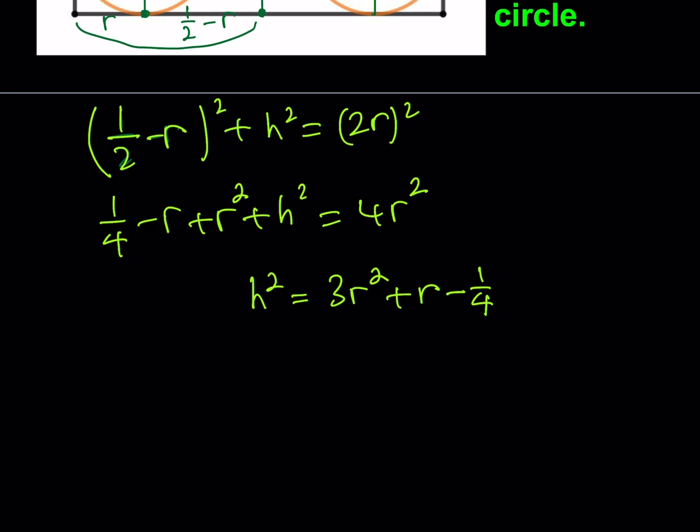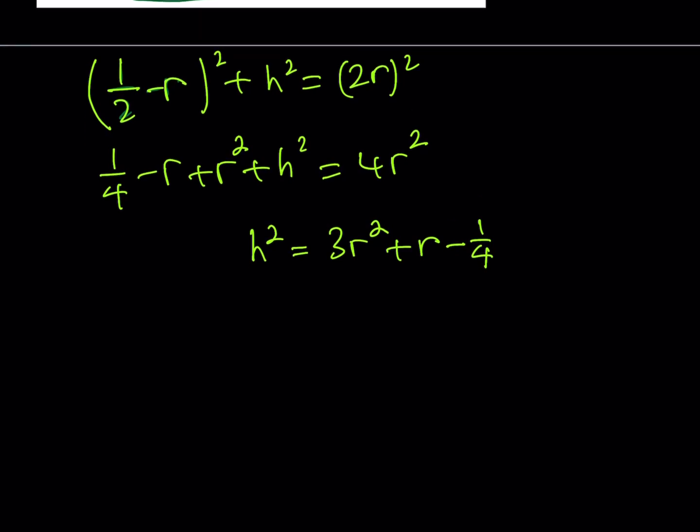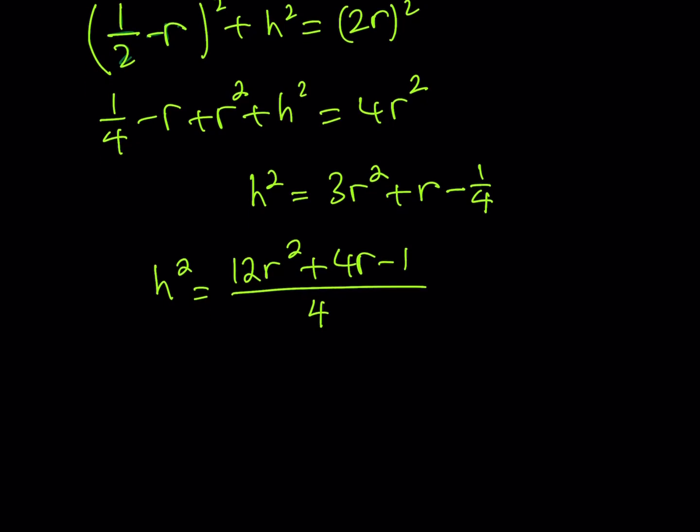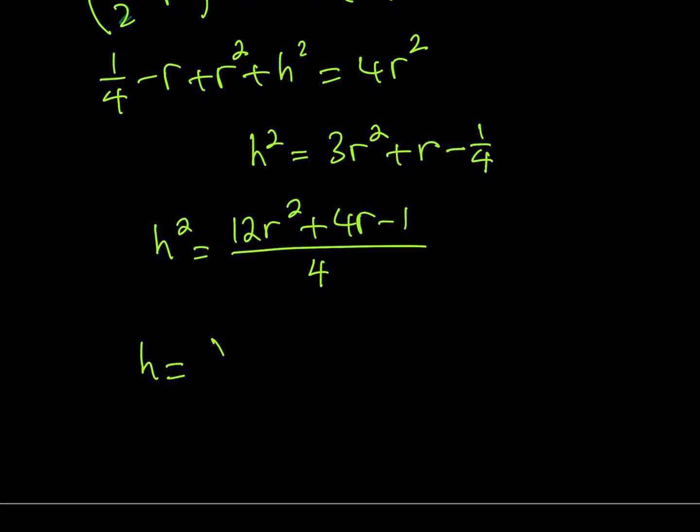Obviously, this can be simplified a little bit. At least we can make a common denominator. I don't want to deal with fractions like this. So what I'd like to do is make a common denominator. In other words, 12R squared plus 4R minus 1 all over 4. Now, this is a little easier to square root. So from here, H is going to be the square root of the numerator and the denominator separately. That's my height in terms of R. So this is the first part. We found the height. Remember, in the problem, height is not the same as R. It's greater than R. So we were able to find it in terms of R, which is good.